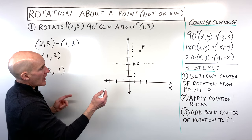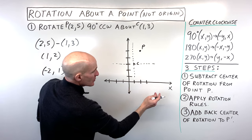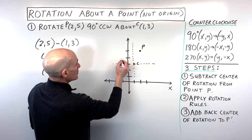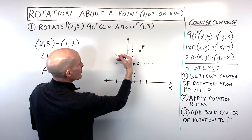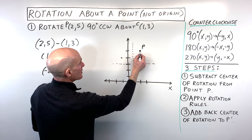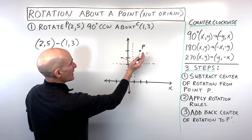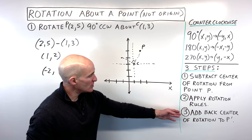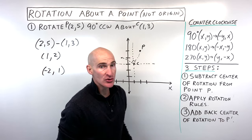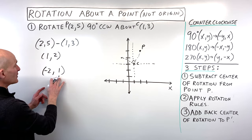From the perspective of the new origin, that's left 2, up 1, and you can see we've rotated 90 degrees. I'll draw some dotted lines — see that right angle there. Then what we want to do is add back the center of rotation to this new point (-2, 1).